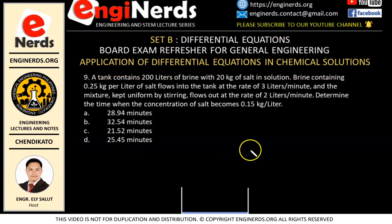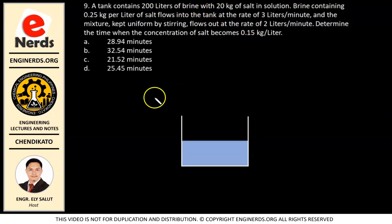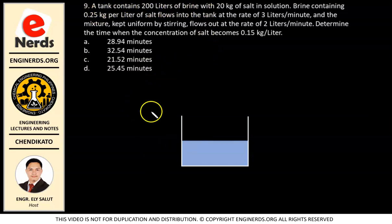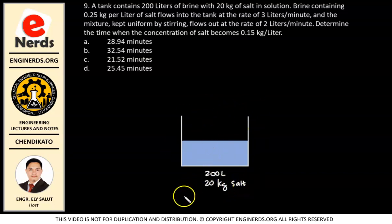So first we have to illustrate our problem so it's easier to solve. We are told that our tank contains 200 liters of brine with 20 kilograms of salt in solution. So this is our initial condition: we have 200 liters of brine and it contains 20 kilograms of salt initially in our tank.